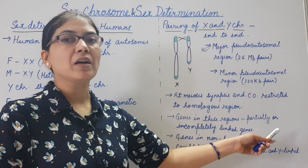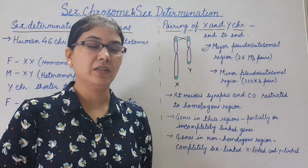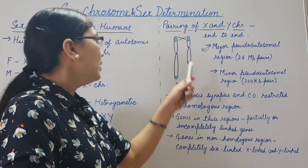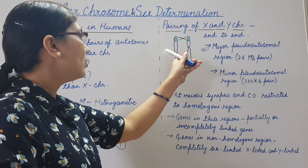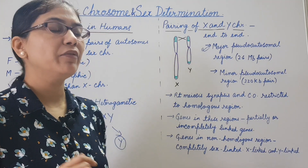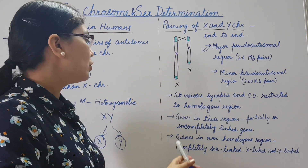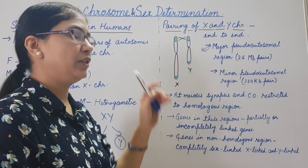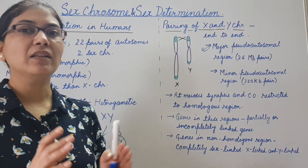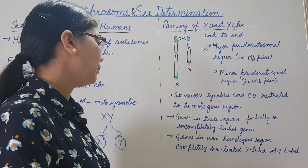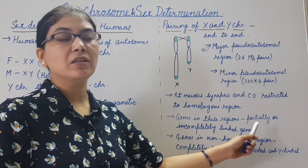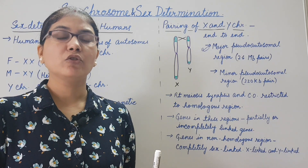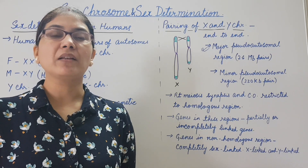Genes present in these pseudo-autosomal regions are not completely linked to other genes on the X and Y chromosomes. So genes in these regions are known as partially or incompletely linked genes, and they do not show X-linked or Y-linked patterns of inheritance. Regions that are non-homologous are also known as differential regions, where genes show complete linkage because no synapsis or crossing over takes place. These genes are known as completely sex-linked genes and show X-linked and Y-linked patterns of inheritance.